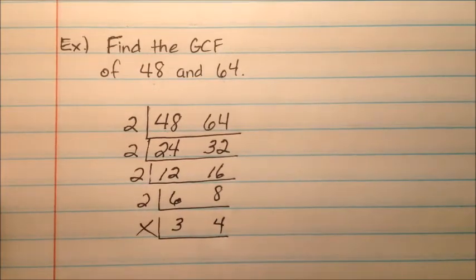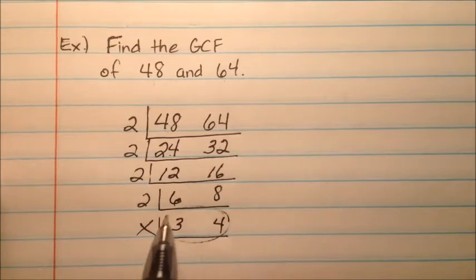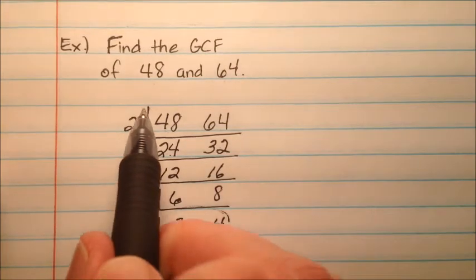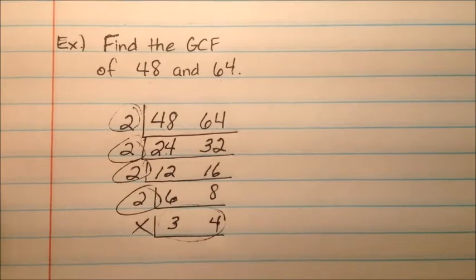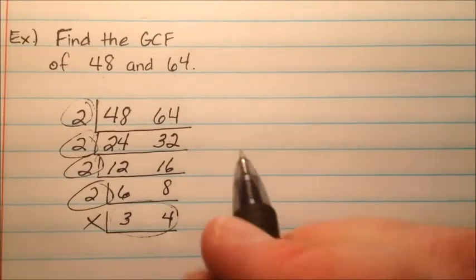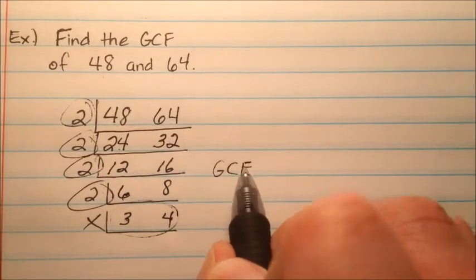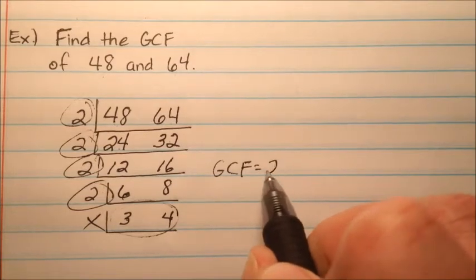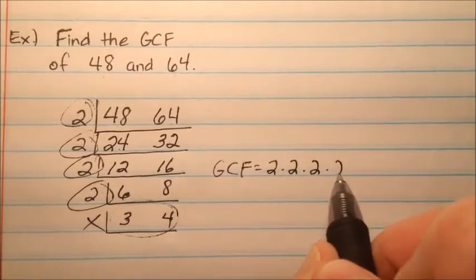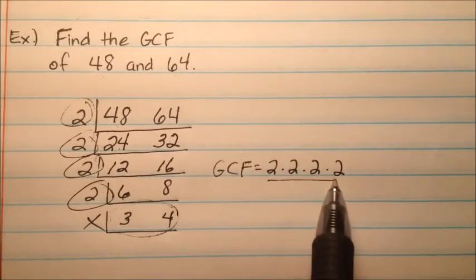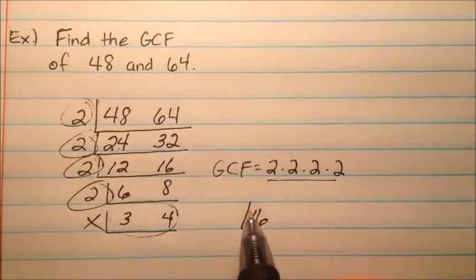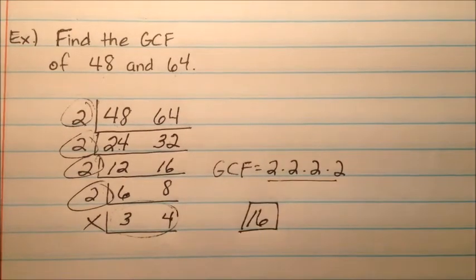After 3 and 4, there are no more common factors. So I had four 2's pulled out, meaning my greatest common factor is 2 times 2 times 2 times 2, all multiplied together, which is 16.